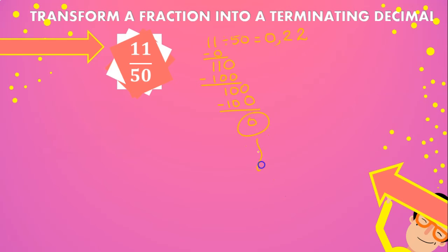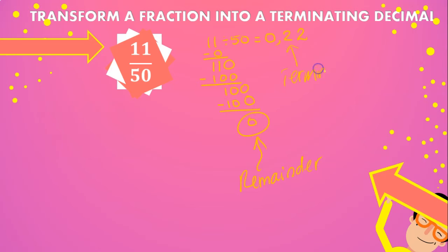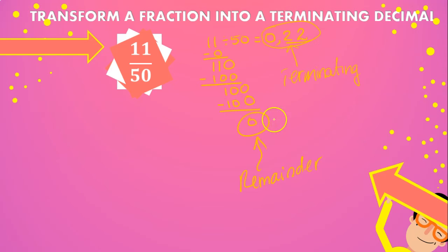Because this remainder is 0, we have to know that this number right here is going to be our terminating decimal. A terminating decimal has a finite number of digits. So in this case we have 2 digits after the decimal point, and because the remainder is 0, we don't have to repeat them. Let's continue with another problem.